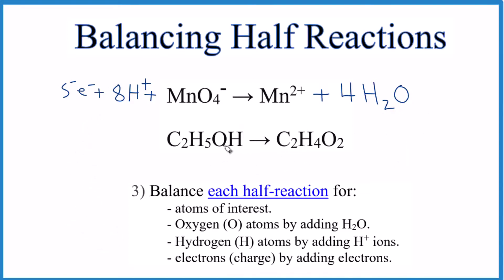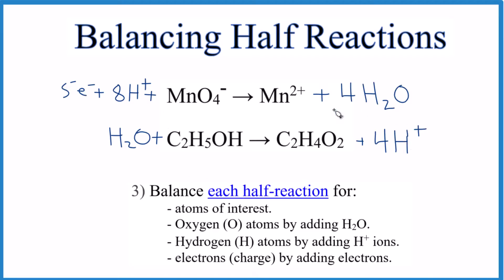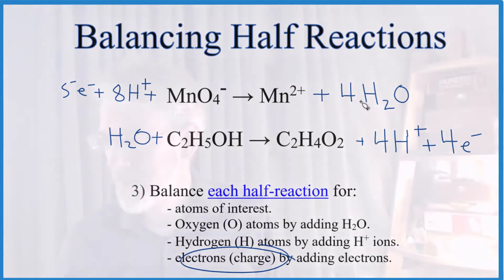For the second half reaction, we have one oxygen and two, so add a water molecule. For hydrogen, we now have two plus five — seven — and four on the other side, so we need four more hydrogen atoms; add four H+ ions. For the charge, this side is neutral and the other has four plus, so add four negative charges — four electrons — and we're done. We've balanced the half reactions. Always check your work: same number of atoms on each side, and charge the same on each side.